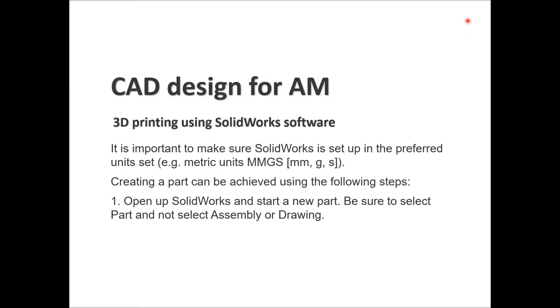It's good to have a reminder and a quick revision on how to create a part using SOLIDWORKS specifically, and to be able to turn that part from a software version to a real-world version through 3D printing technologies. Before you start in SOLIDWORKS, you want to make sure that you have the right set of units — either empirical or metric. If you prefer metric units, make sure your units are set to MMGS, which represents millimeter, gram, and second.